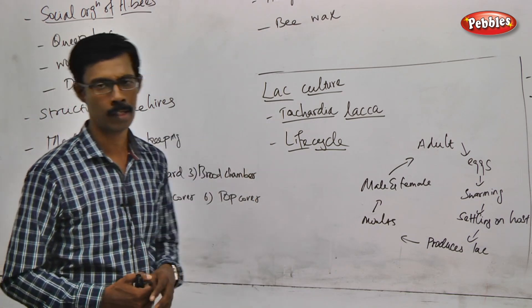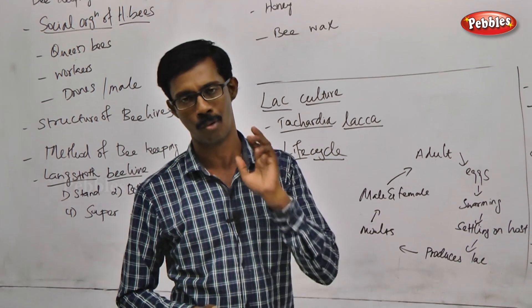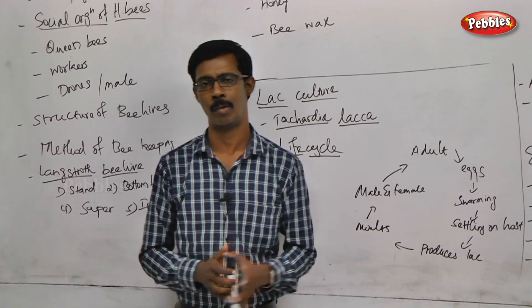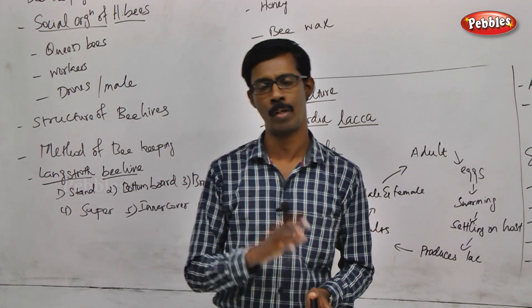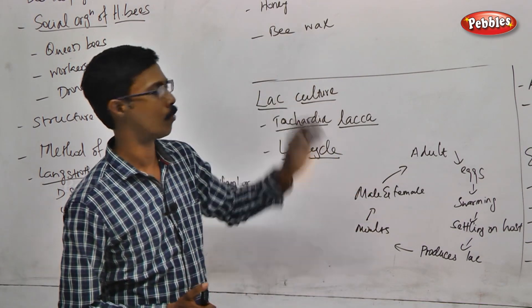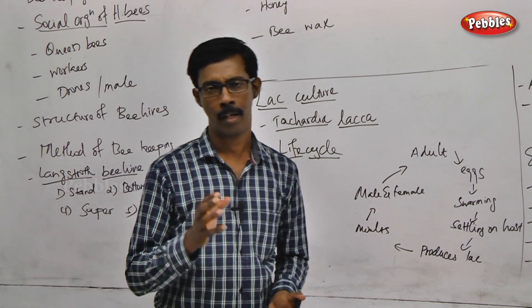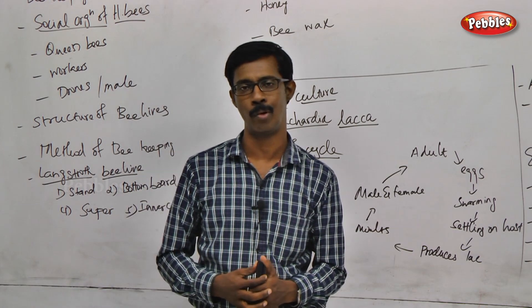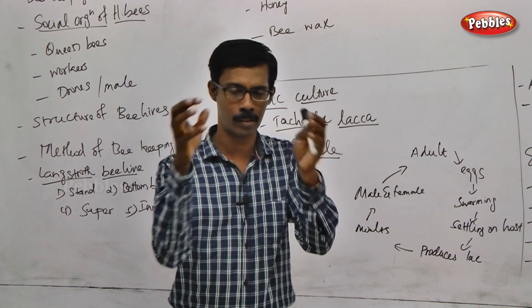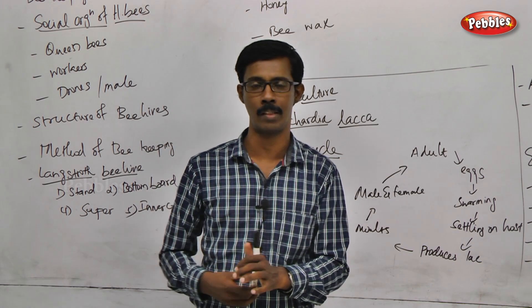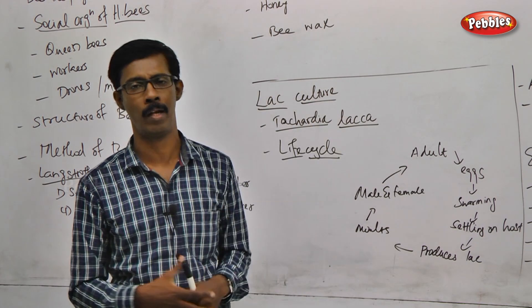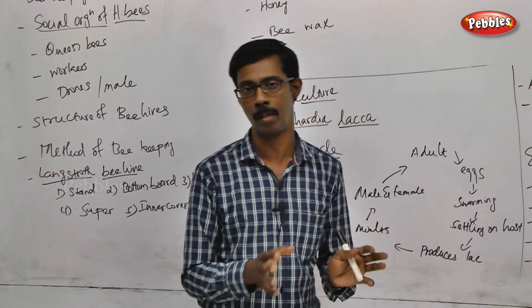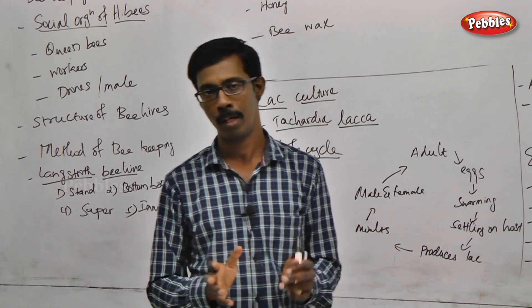In the apiculture industry, there are two major products. The primary product is honey, used as a sugar supplement. The second product is beeswax, a substance that forms the comb structure. Beeswax is used in various commercial wax applications. This technique is called Apiculture.